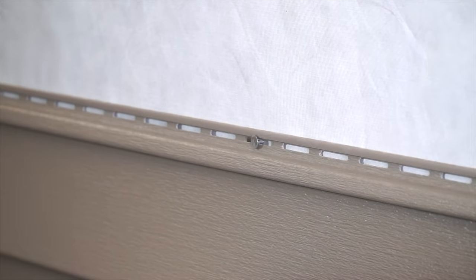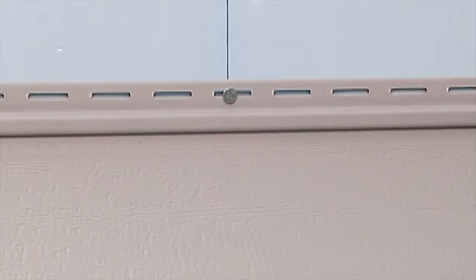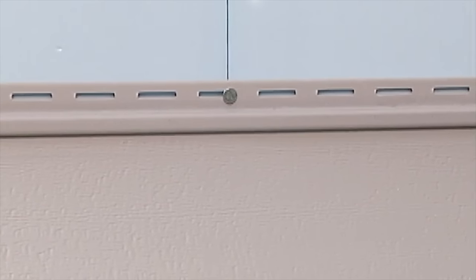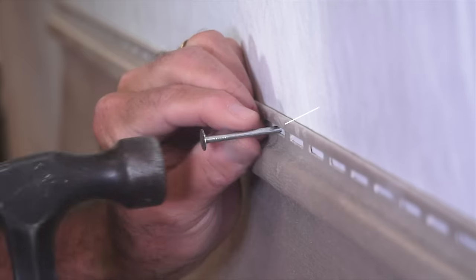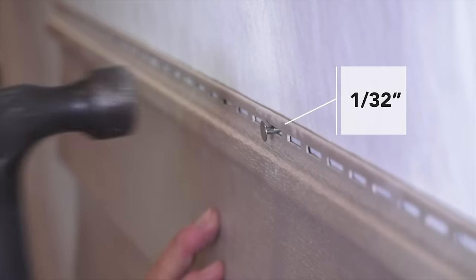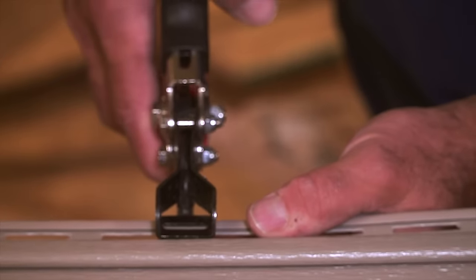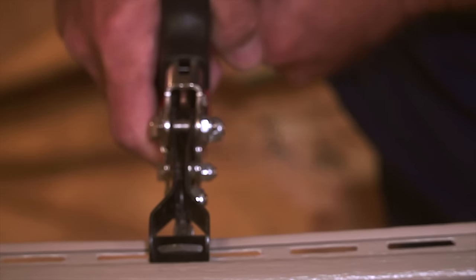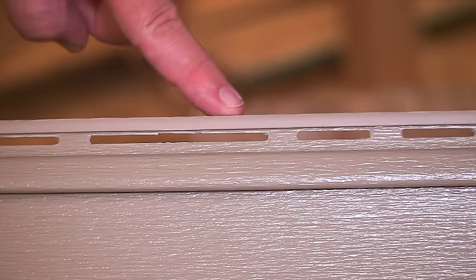Never nail tight, since vinyl siding panels expand and contract slightly when the weather changes. Always leave a gap of approximately 1/32nd of an inch between the fastener head and the vinyl siding, or about the thickness of a dime. If a nail slot does not allow centering of the nail, use a nail hole slot punch to extend the nail slot.